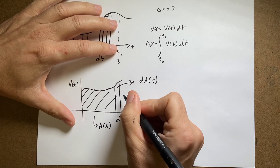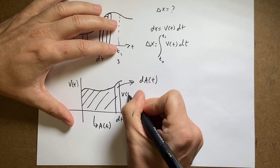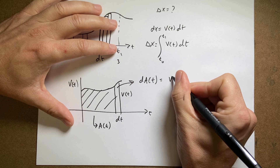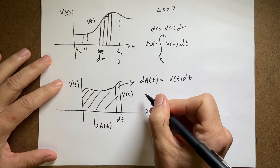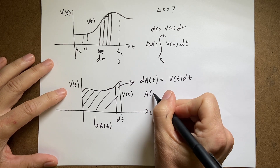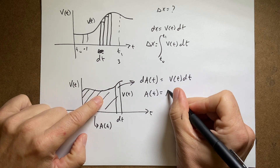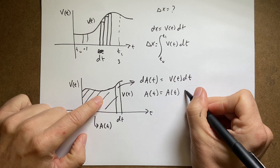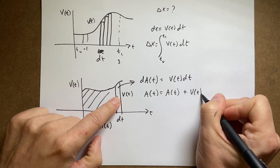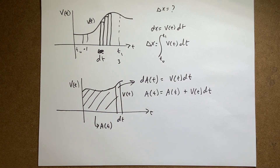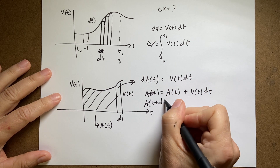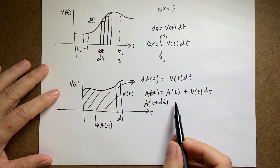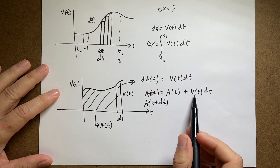What's the size of this new piece? It has a height of v(t) and a width of dt, so dA equals v(t) times dt. The total area A(t + dt) equals the area before, A(t), plus this added piece v(t) dt.